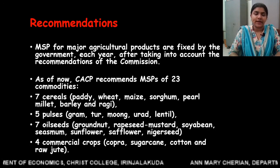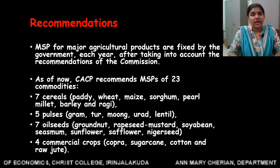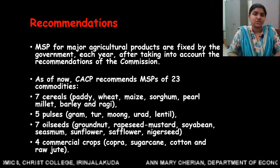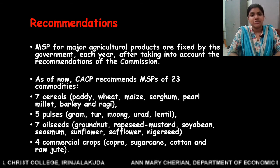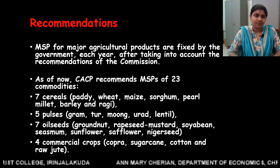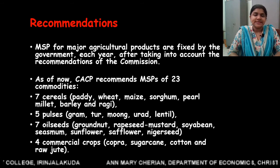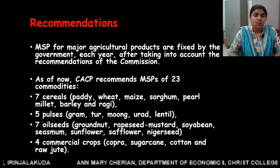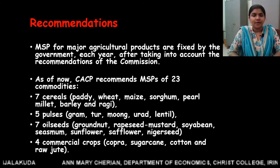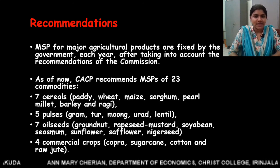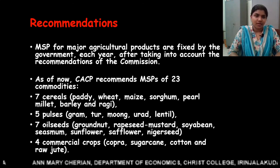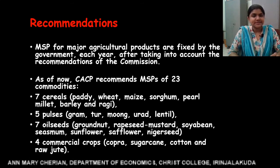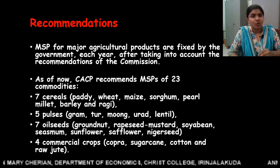Minimum support prices for agricultural commodities are fixed by the government each year after taking into account the recommendations of the commission. As of now, CACP recommends minimum support prices for 23 commodities — a correction from the previously mentioned 22. These 23 commodities include 7 cereals, 5 pulses, 7 oilseeds, and 4 commercial crops.